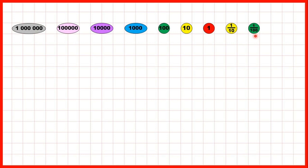So if we have 10 of the same counter, we can always exchange those 10 for one counter from the place value to the left.